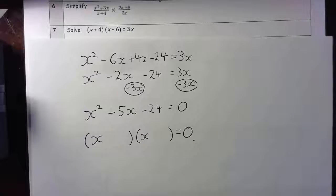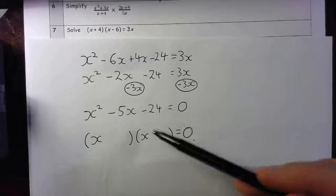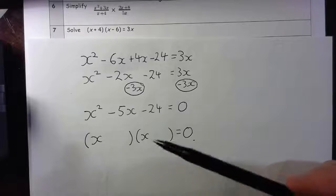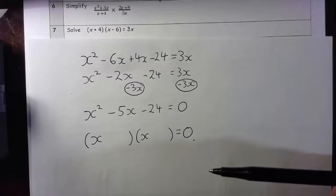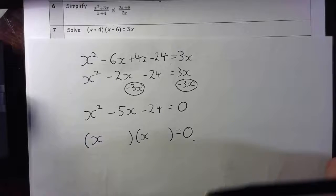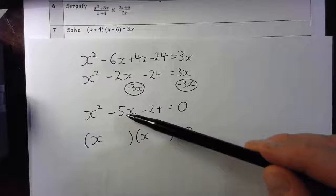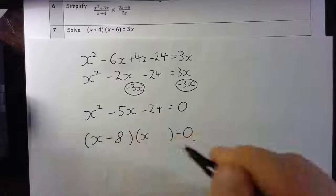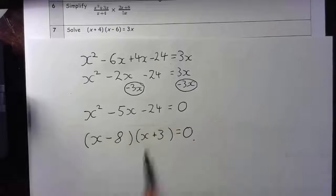Now I need to think of factors of minus 24 that are going to add together to give me minus 5. Straightaway, something that's coming into my head is 8 and 3, because 8 times 3 would be 24. But 8 and 3 can add together, subtract, or give me minus 5. I just need to be thinking about which way round it's going to go. I need more negatives because I need to get to minus 5.